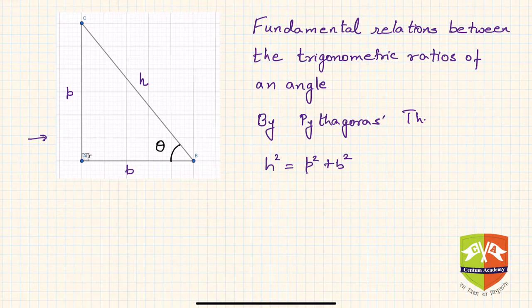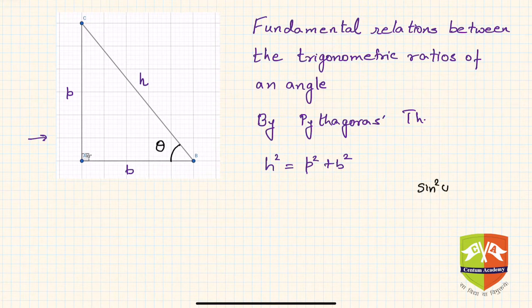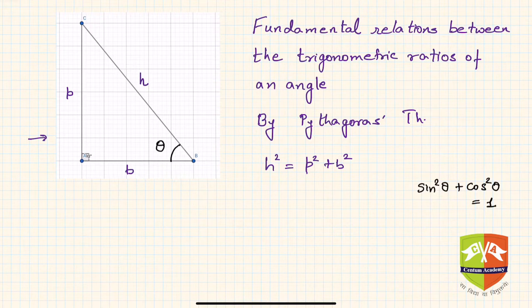In this session we are going to discuss another fundamental relation between the trigonometric ratios. In the last session we observed that sine squared theta plus cosine squared theta is always one, irrespective of whatever is the value of theta. We derived this by dividing the equation obtained using Pythagoras theorem by h squared.